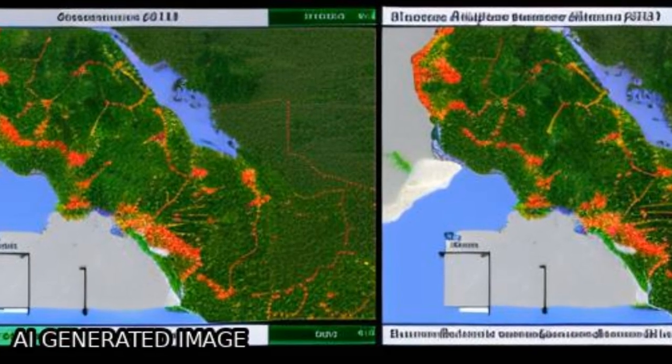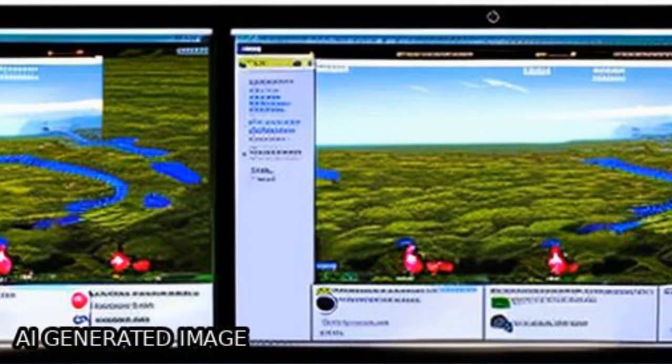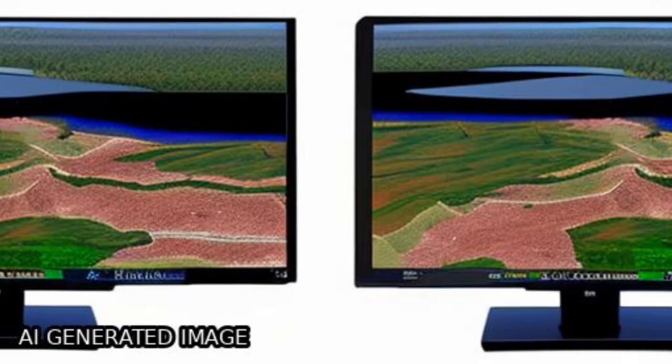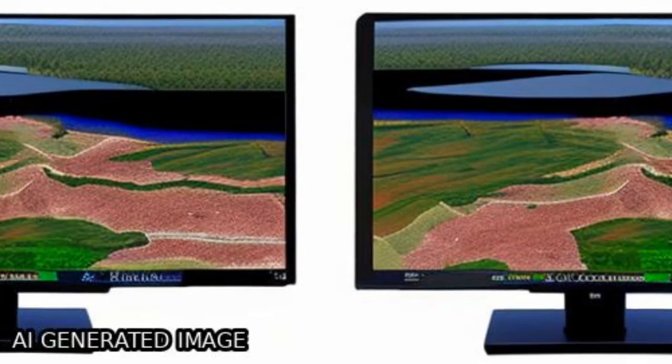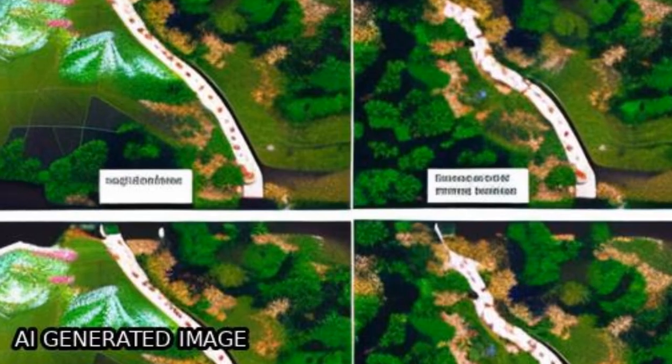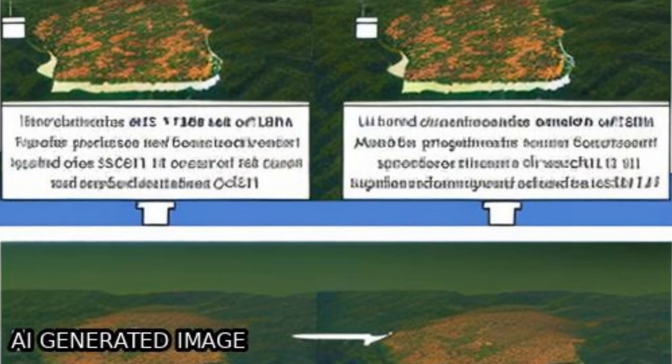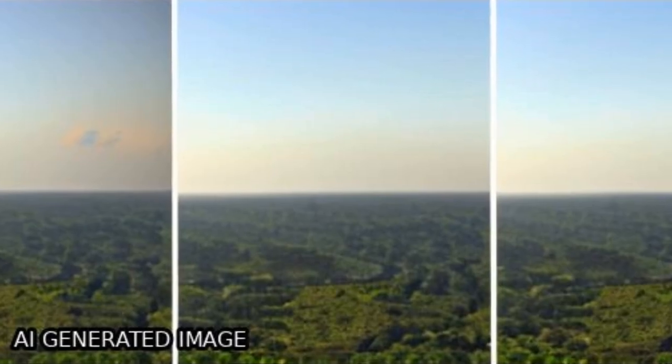The emphasis was on deforestation, dynamic change between secondary forest and agropasture, and urbanization over time.